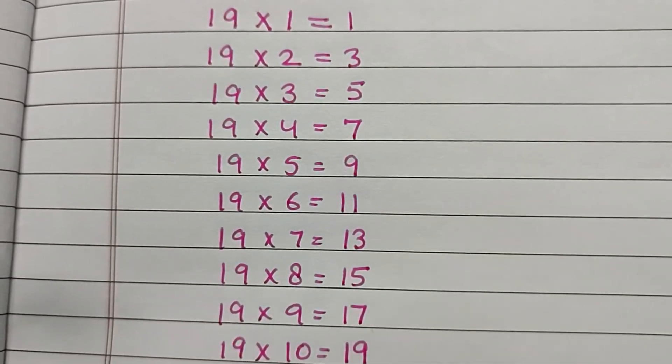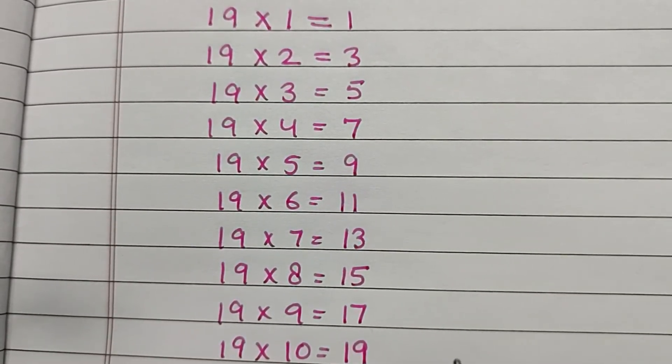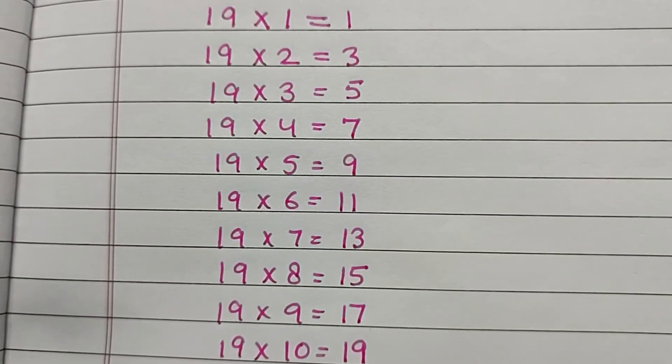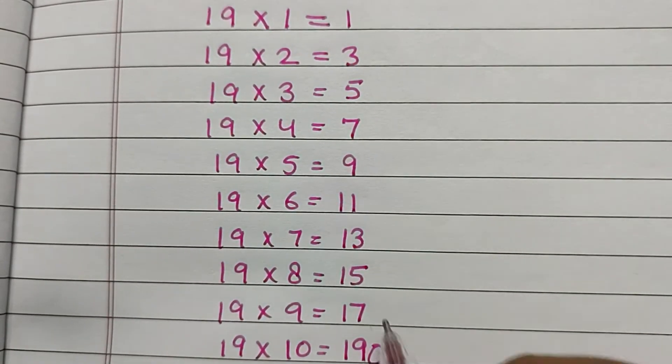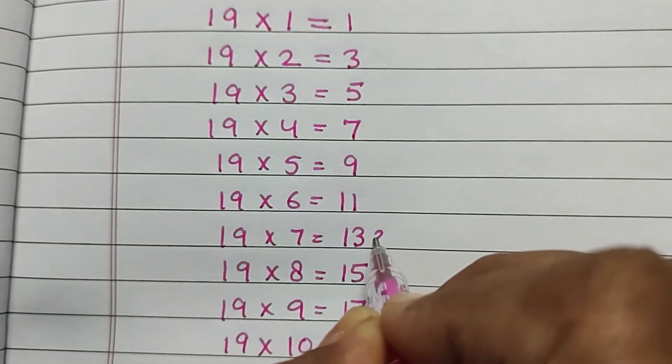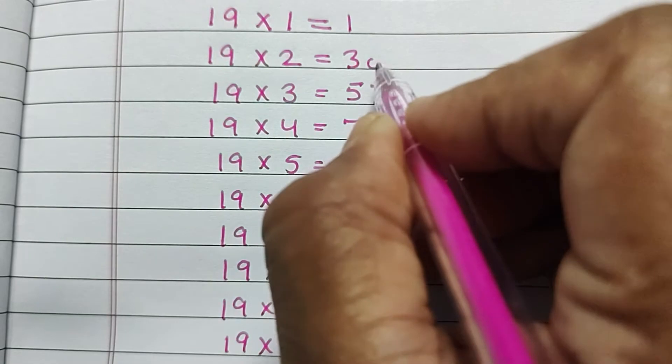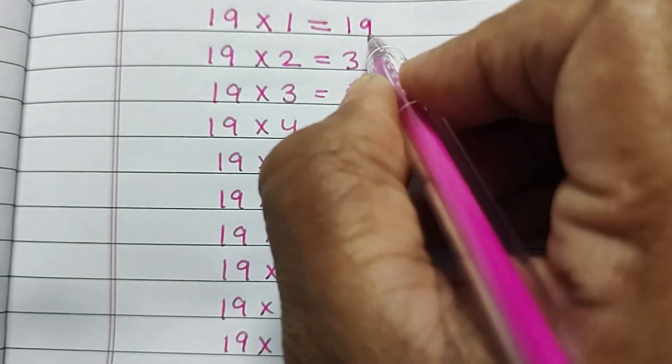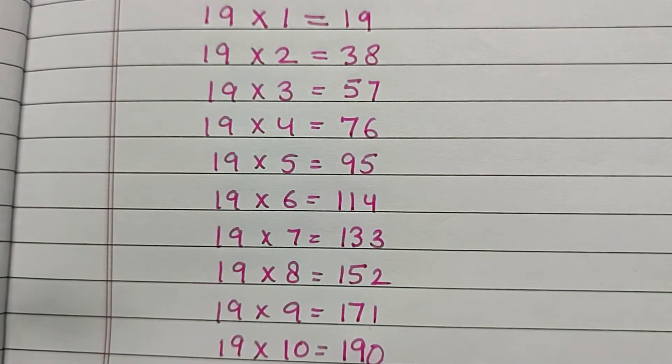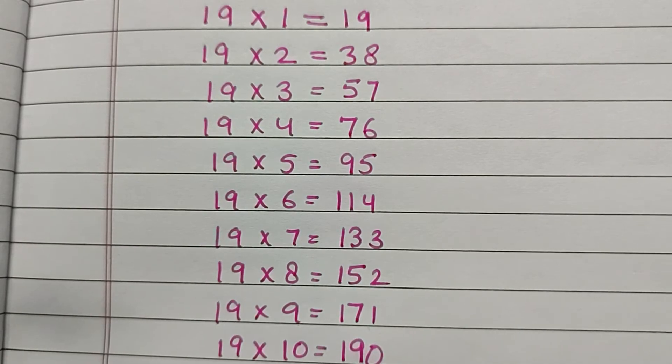Now the second step: we have to write the numbers 0 to 9 in upward direction - 0, 1, 2, 3, 4, 5, 6, 7, 8, and 9. So here is our table of 19, and we have written it very simply and very easily.